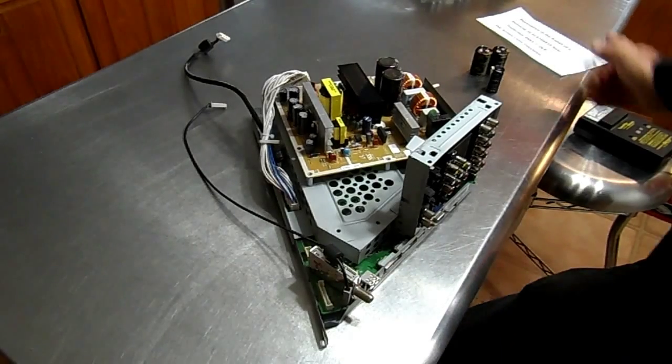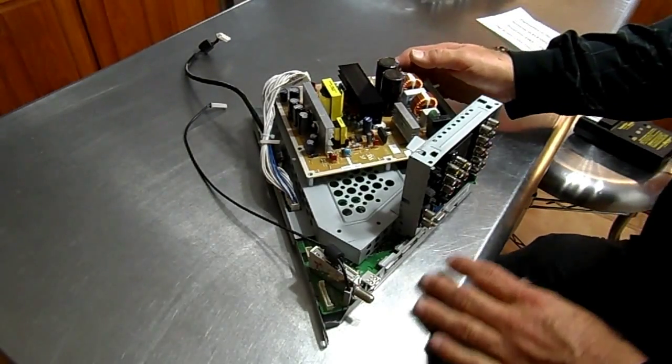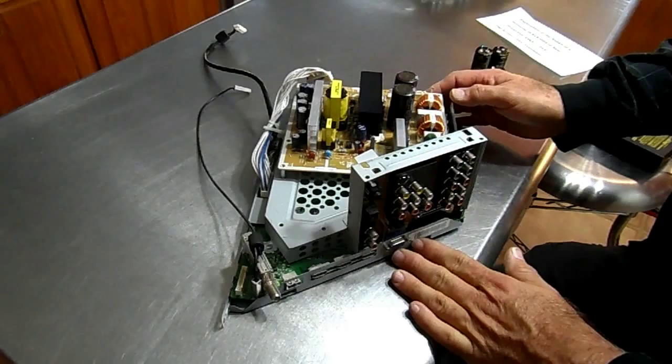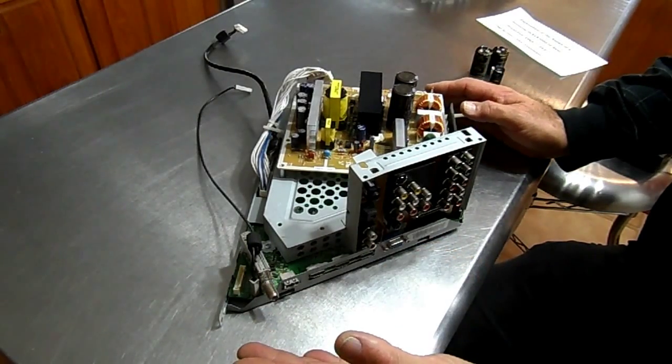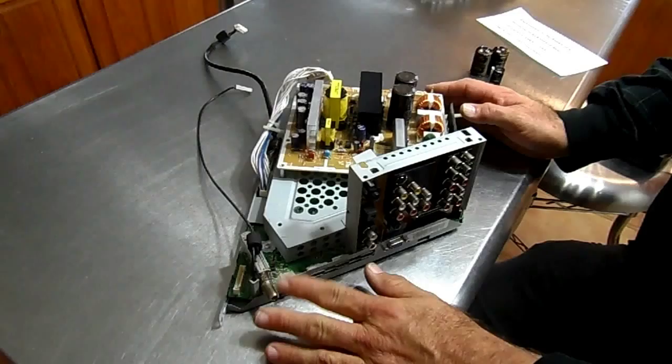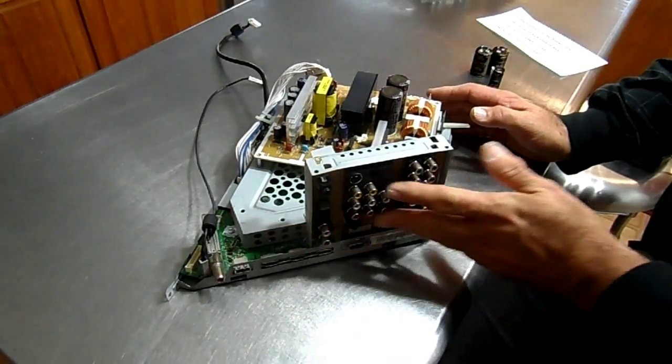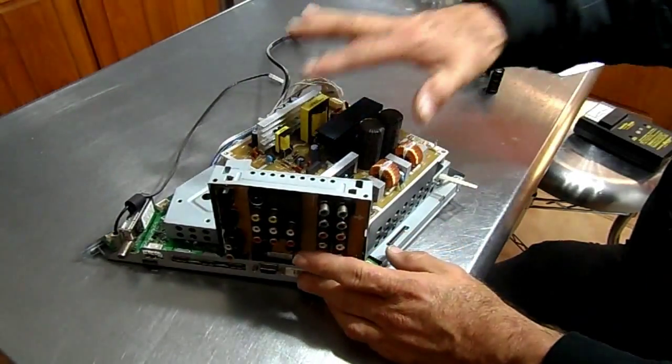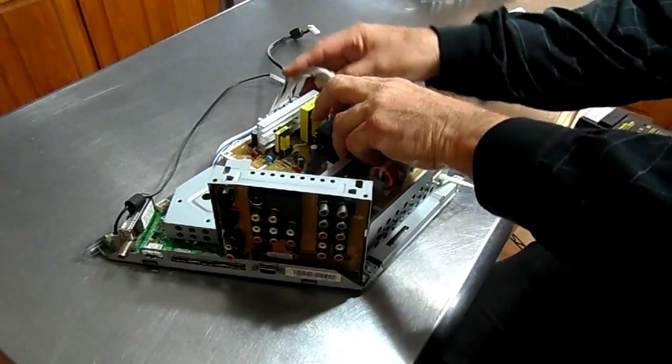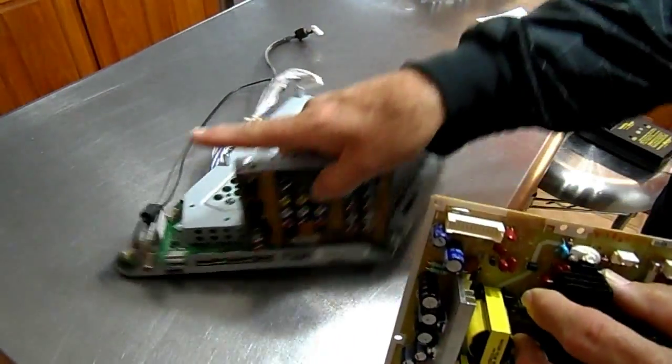This is the power supply and signal processor board out of that set. It's located on the left hand side at the back of the chassis. You can see the tuners here, audio video connections here, power supply lays in behind it. I have it cut loose so I can remove it and demonstrate.